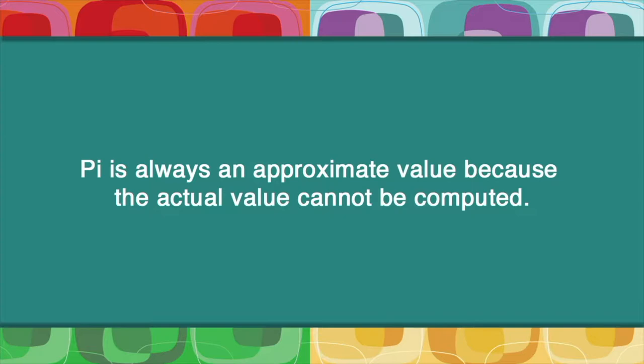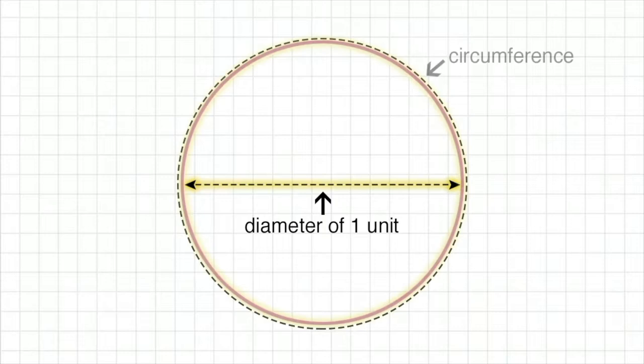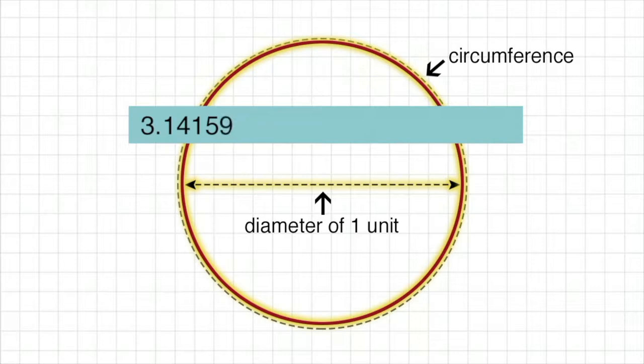Pi is always an approximate value because the actual value cannot be computed. For example, a circle with a diameter of 1 unit has an approximate circumference of 3.14159, etc.